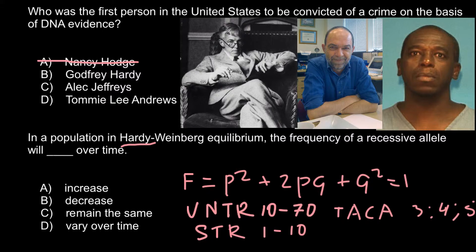Today, the FBI uses the CODIS system, which uses certain short tandem repeat fragments to identify a person. Because we are diploid — half our chromosomes come from our mother and half from our father — the system analyzes 26 different fragments on our chromosomes. The number of possible combinations exceeds the population of our planet, making the system extremely reliable for identification.